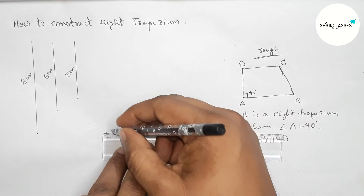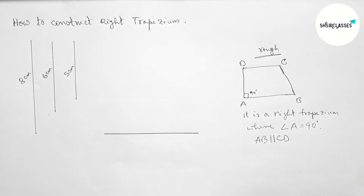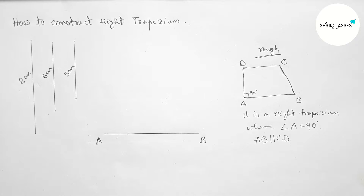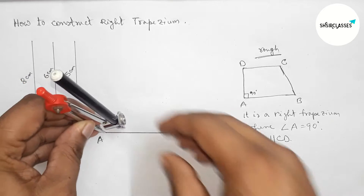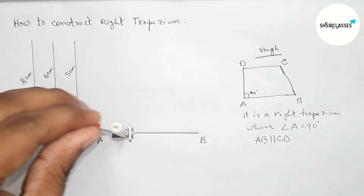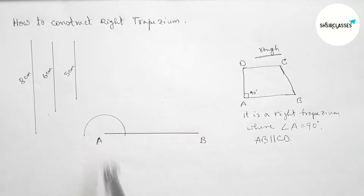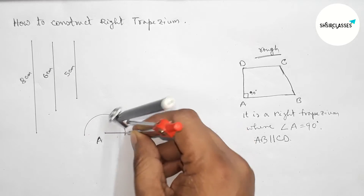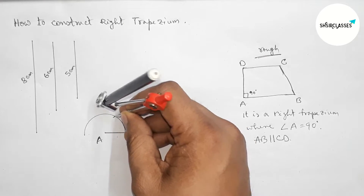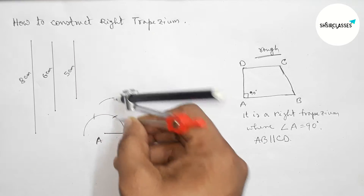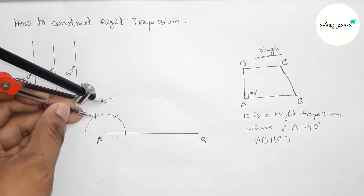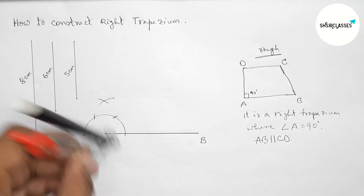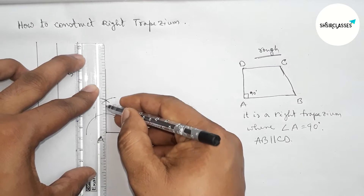First, drawing a line segment of length 8 centimeters and taking points A and B. Now drawing a 90-degree angle at point A with the help of a compass. Taking any length, drawing an arc, then placing the compass and cutting arcs at the same length repeatedly to construct the angle.